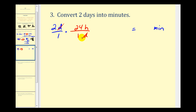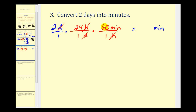The days will now simplify out, but now we have hours and we need to convert those into minutes. So we put hours in the denominator and minutes in the numerator, with the conversion one hour to sixty minutes. The hours simplify out, leaving us to find the product two times twenty-four times sixty. Two times twenty-four is forty-eight, times sixty gives us two thousand eight hundred eighty minutes.